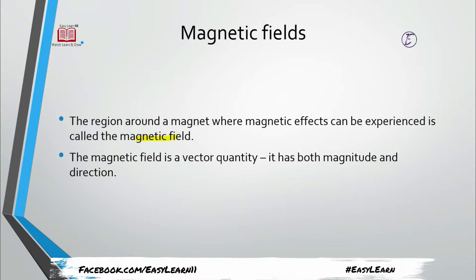The magnetic field is a vector quantity. There are two types of quantities: scalar quantities and vector quantities. Scalar quantities, like time, do not need any direction — they only need magnitude. For example, when I tell you the time, you don't need a direction to understand it. But if I want to explain my location, I need to give you both distance and direction.